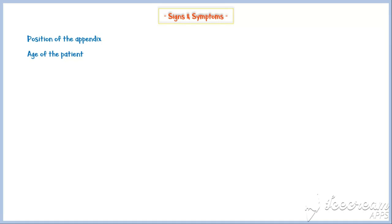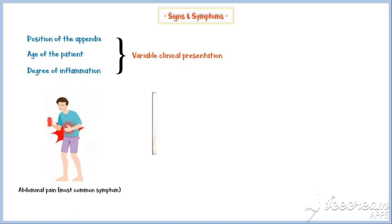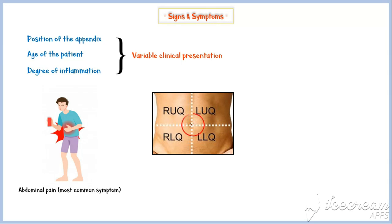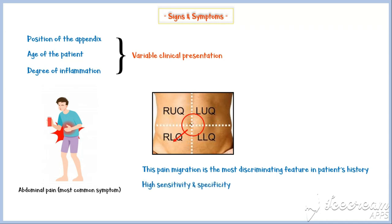Now let's discuss the signs and symptoms of appendicitis. In appendicitis, the position of the appendix, age of the patient, and degree of inflammation make the clinical presentation highly variable. The most common symptom is abdominal pain, which typically begins as periumbilical or epigastric pain, migrating to the right lower quadrant of the abdomen. This pain migration is the most discriminating feature in the patient's history, with high sensitivity and specificity. Patients usually lie down, flex their hips, and draw their knees up to reduce movement and avoid worsening their pain.